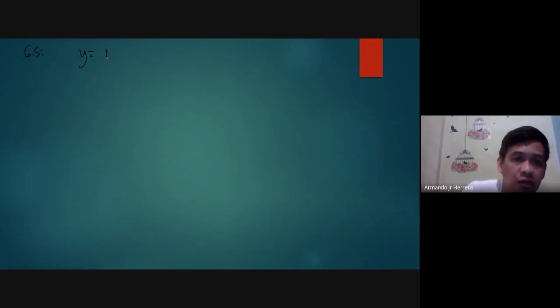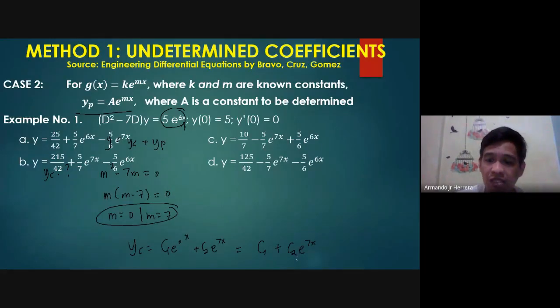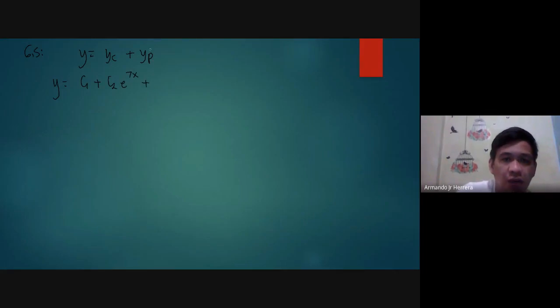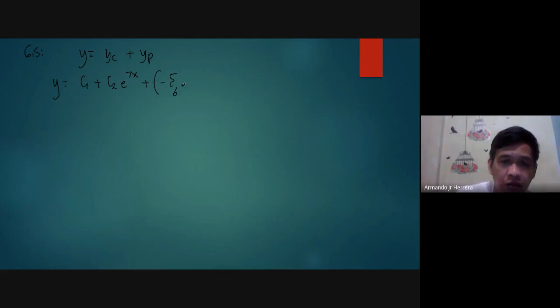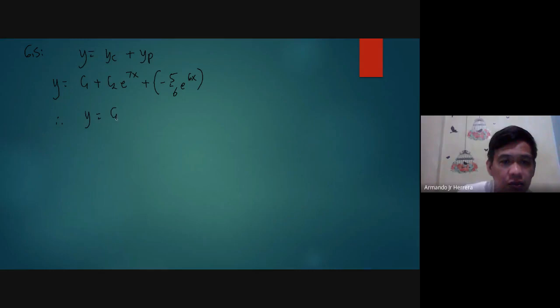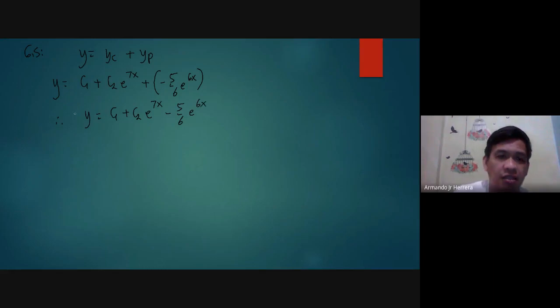From there, the general solution y equals yc plus yp. So yc is c1 plus c2e to the 7x, and therefore y equals c1 plus c2e to the 7x minus 5 over 6 times e to the 6x. That is our general solution.